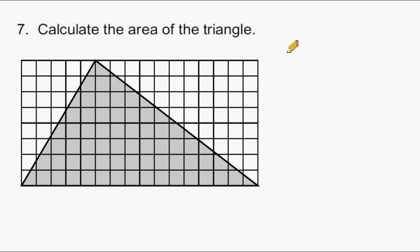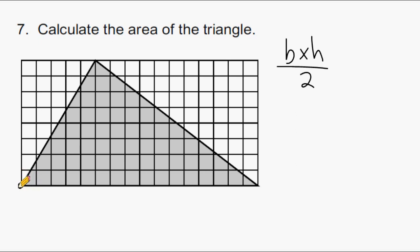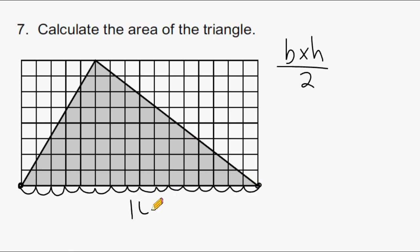For a triangle, we multiply its base times its height and divide by 2. Starting at the leftmost point of the base and counting across the graph paper, the base is 16 units. Now we need to figure out the height.